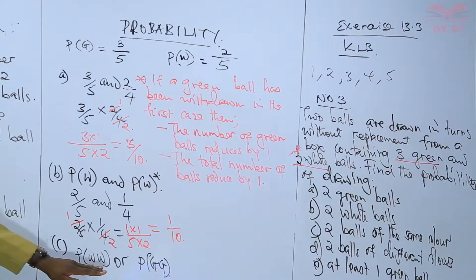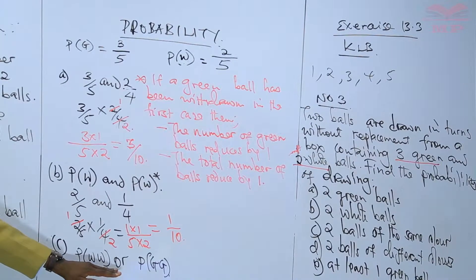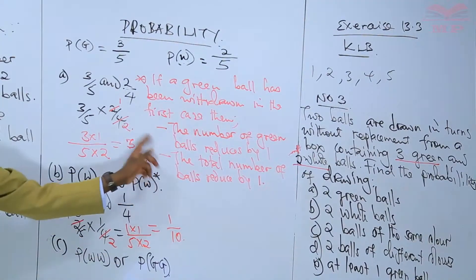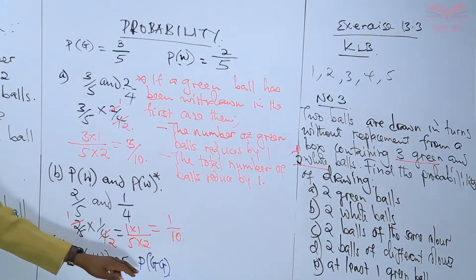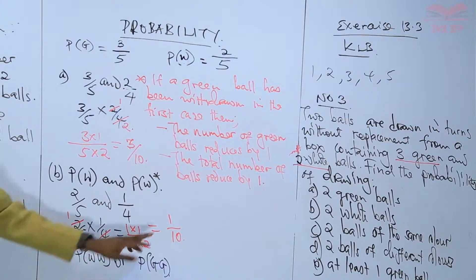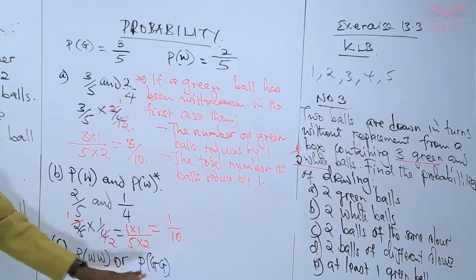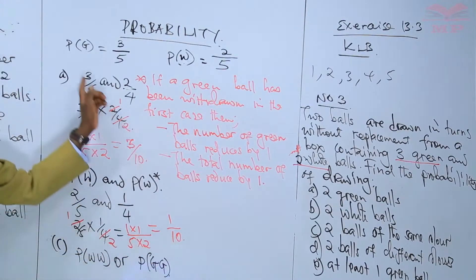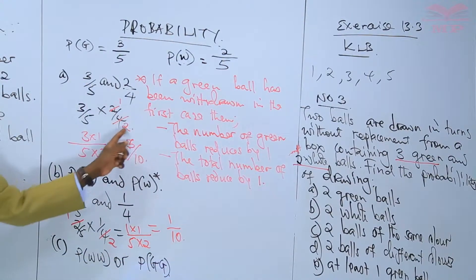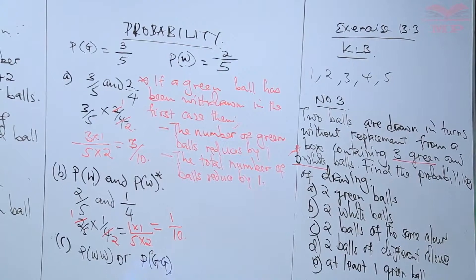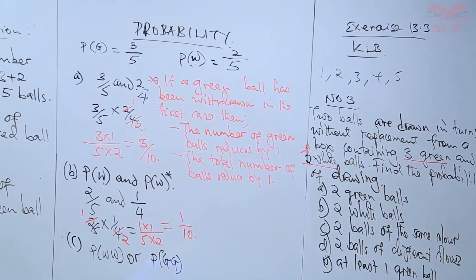If we talk of the probability of white and white, we have it here, which is one over ten. When we talk of the probability of green and green, we already have that at three over ten. So instead of calculating this again, we have to be very clear when working with probability, because we can use an answer we got earlier in a later working.